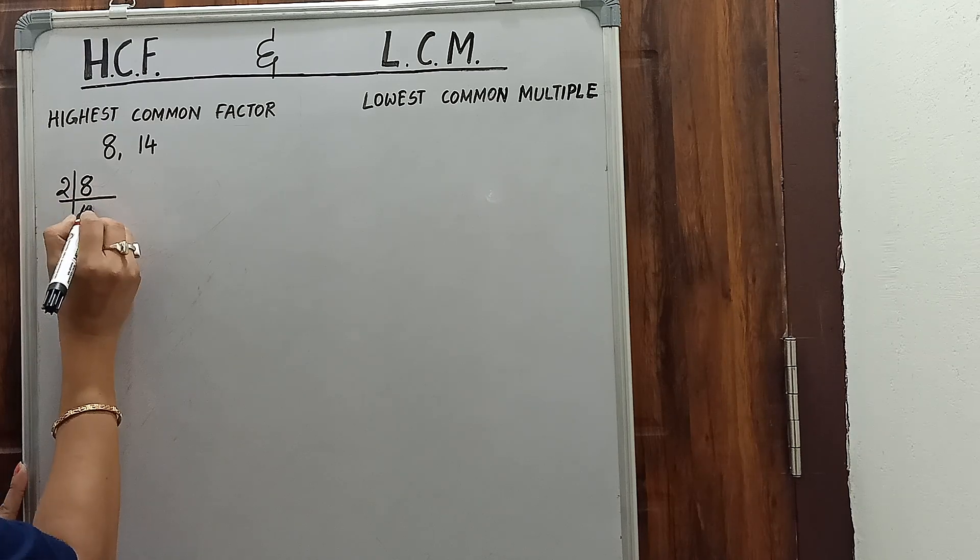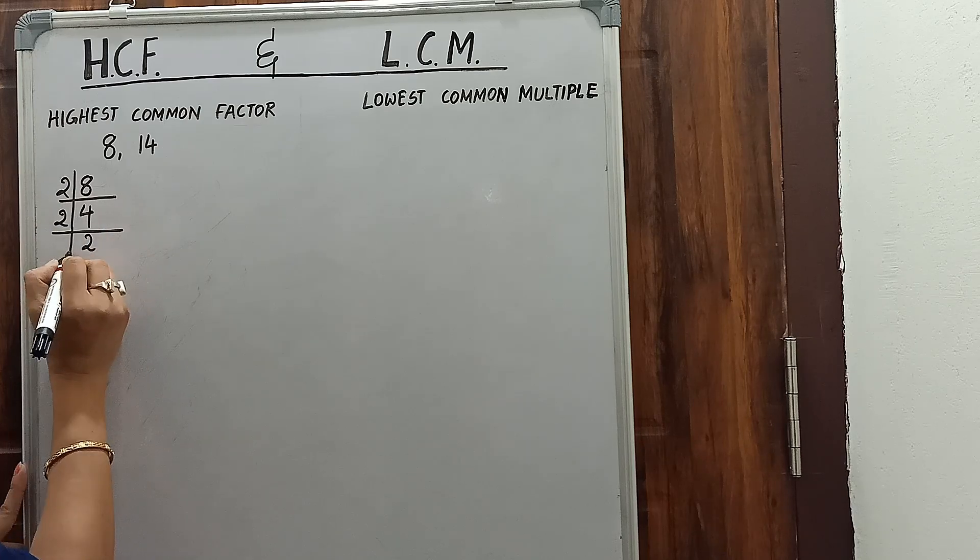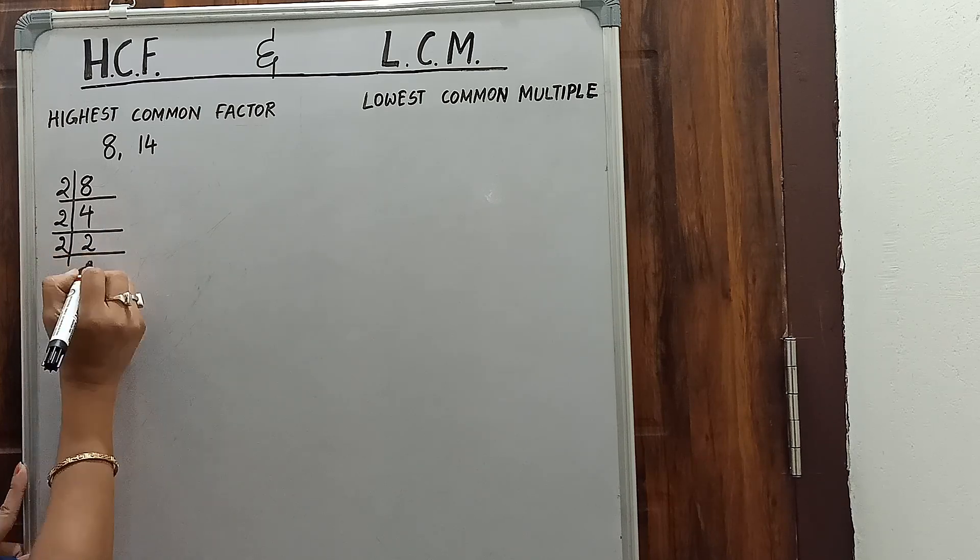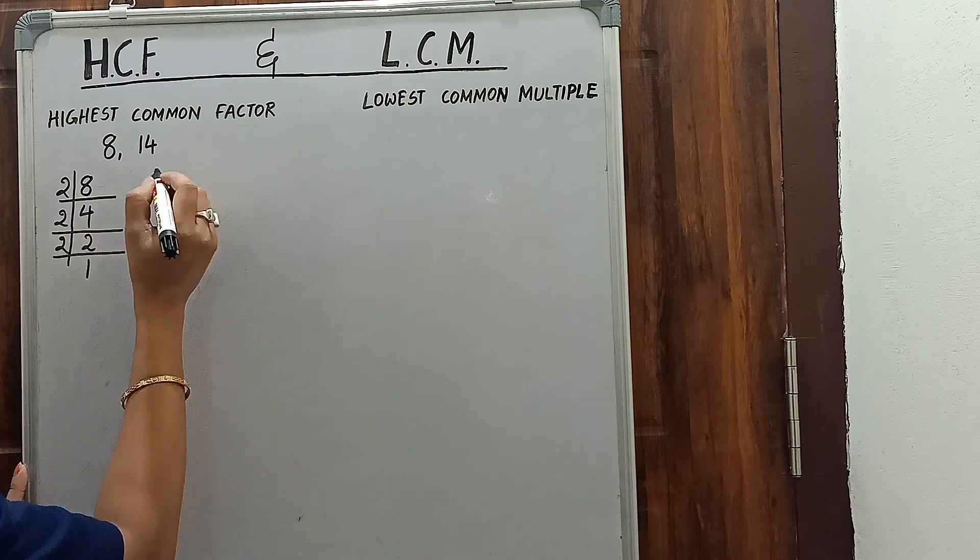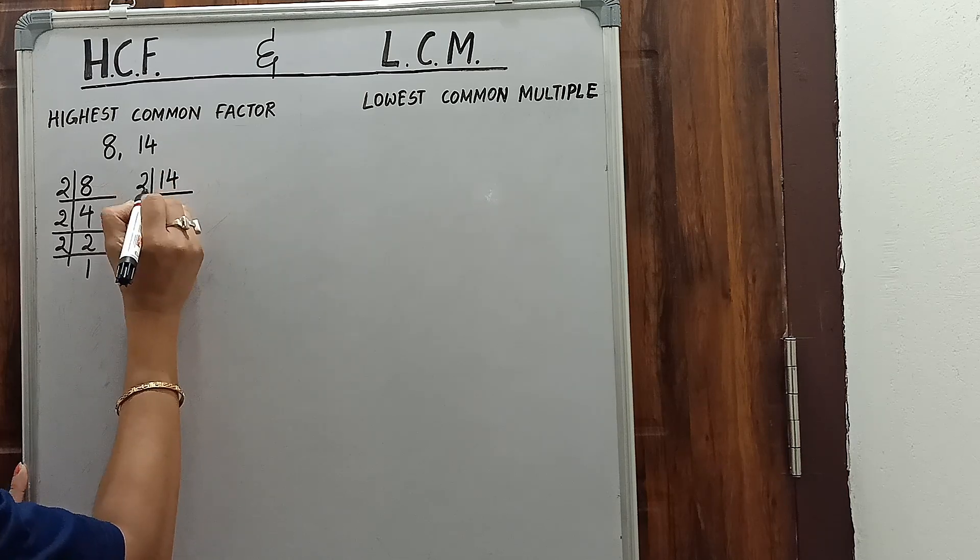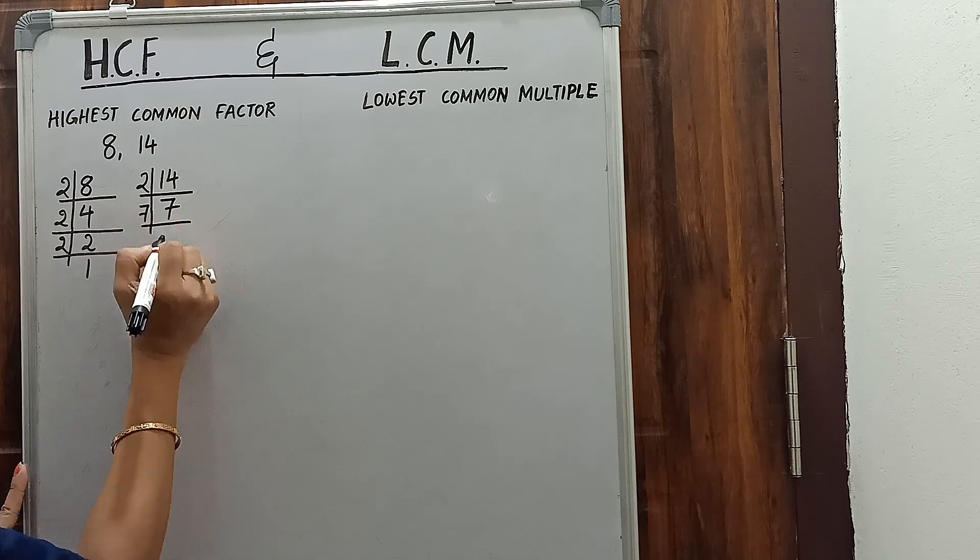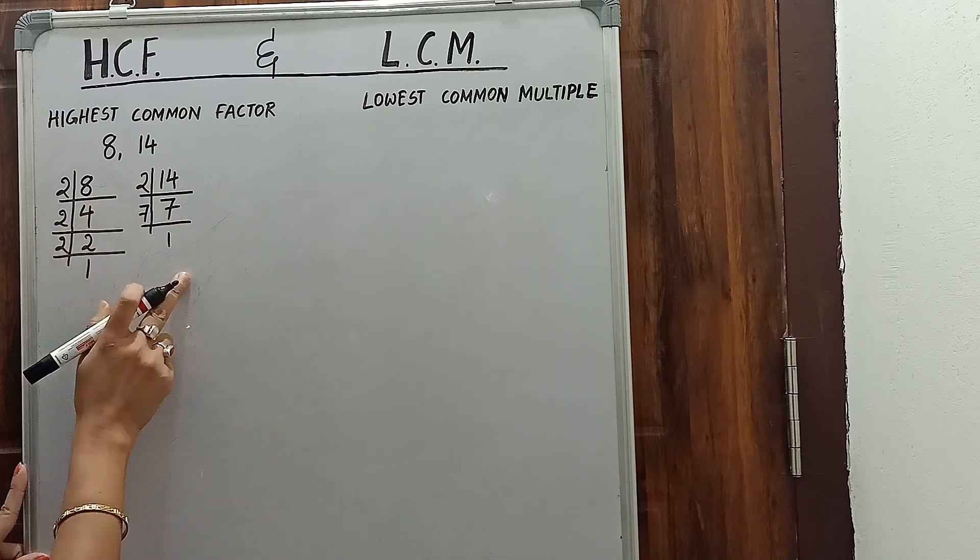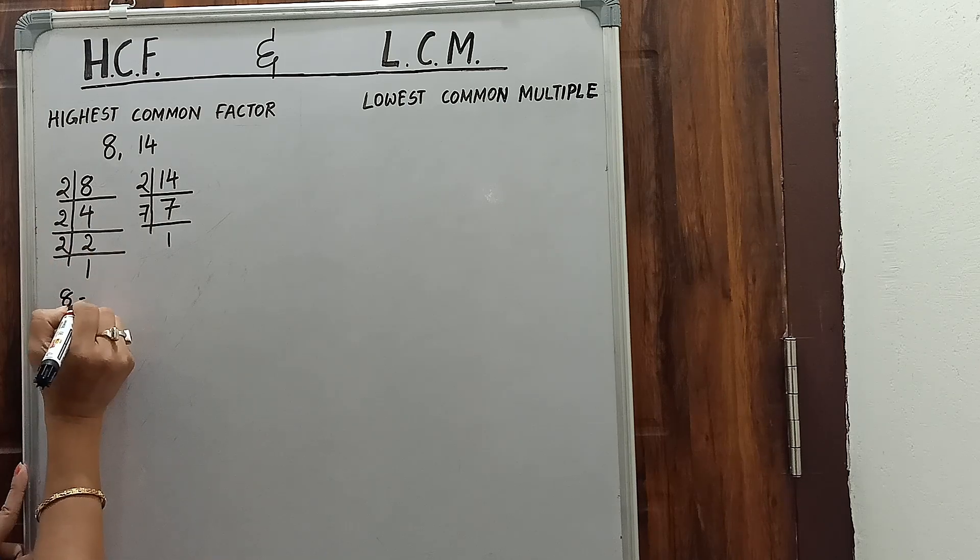What are the factors of 8? 2 times 4 is 8, 2 times 2 is 4, and 2 times 1 is 2. So these are the factors of 8. In the same way, we will find out the factors of 14. 2 times 7 is 14, and 7 times 1 is 7. So these are the factors of 14.